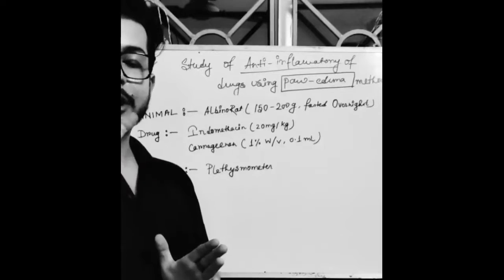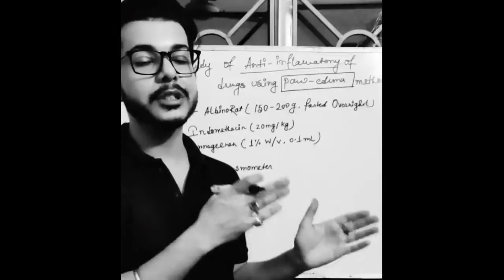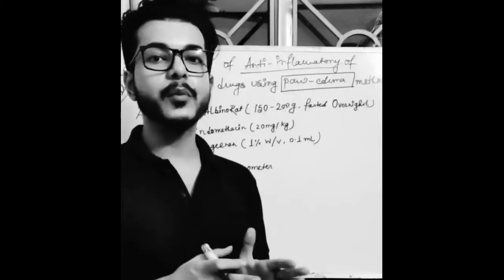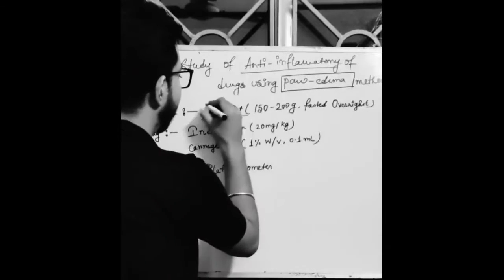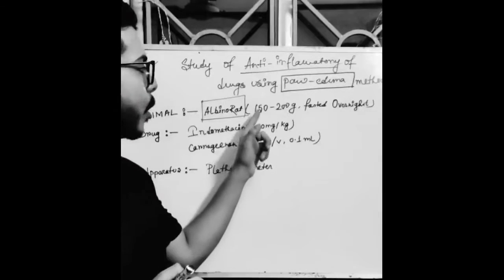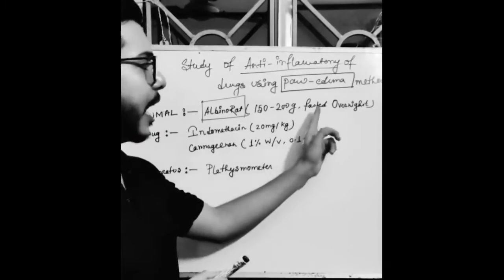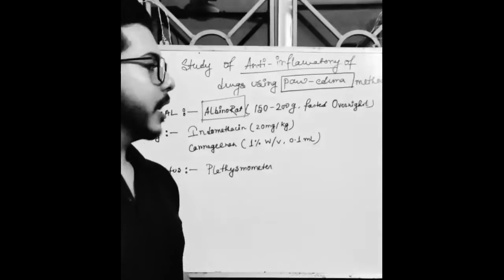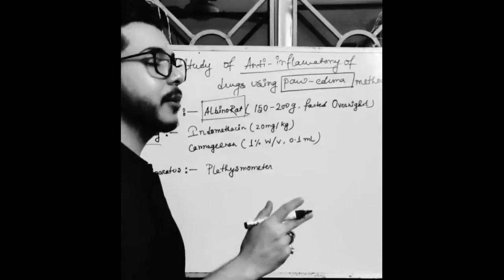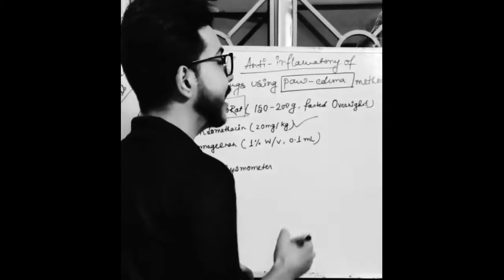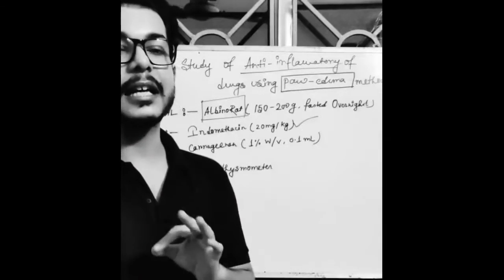We will be using a particular drug which induces the swelling, and another drug which will help to reduce the swelling. For that, we are going to take an albino rat weighing 150 to 200 grams, of any gender — either male or female — and it will be fasted overnight. The next consideration for this experiment is the drug. We are having two drugs. One is indomethacin — I-N-D-O-M-E-T-H-A-C-I-N.